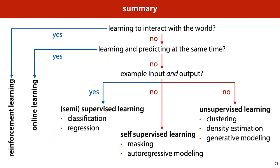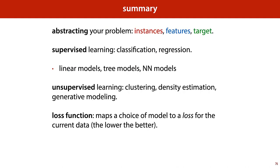So this is the picture we've built up of the various abstract tasks of machine learning. We will spend most of our time in the supervised learning category, but the techniques we develop will translate very naturally to other categories as well. We've talked about abstracting your problem into instances, features, and target values; supervised learning tasks such as classification and regression; linear models, tree models, and nearest neighbor models; unsupervised methods like clustering, density estimation, and generative modeling; and in all cases, the importance of using a loss function — a function that maps a choice of model to a loss for the current data, where the lower the loss, the better.